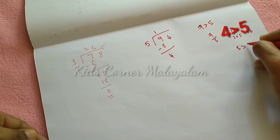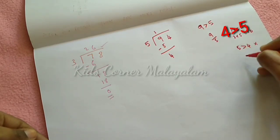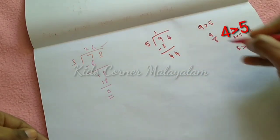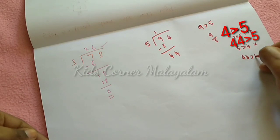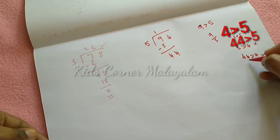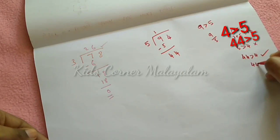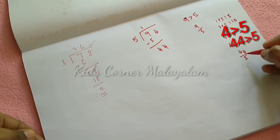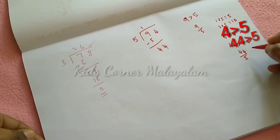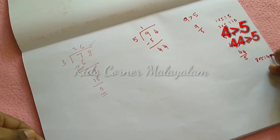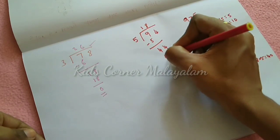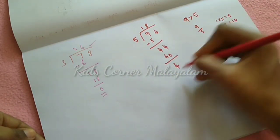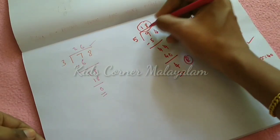Now we check: 5 is not equal to 4 — this is wrong. Then we look at 44: 44 is greater than 4. Now we divide in the next step: 44 divided by 5. We find that 8 fives are 40. So the answer is 8, with a remainder of 4. The quotient is 18.